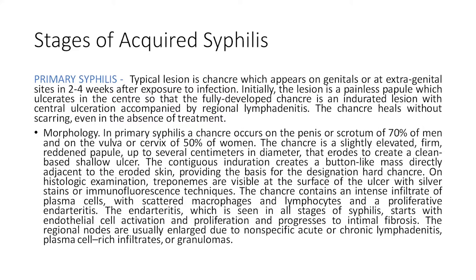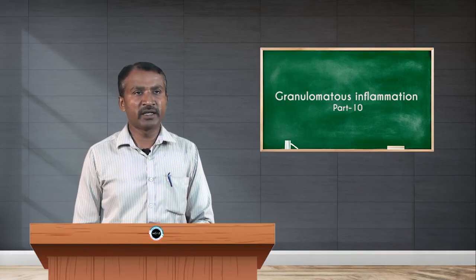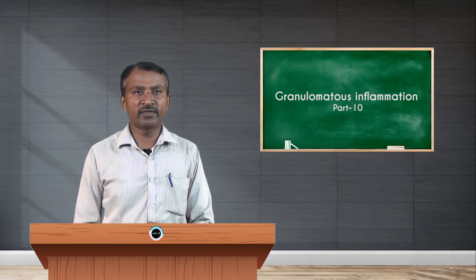In primary syphilis, a chancre occurs on the penis or scrotum in 70 percent of men, and on the vulva or cervix in 50 percent of women. The chancre is a slightly elevated, reddened papule up to several centimeters in diameter that erodes to create a clean-based shallow ulcer. The characteristic induration creates a button-like mass directly adjacent to the eroded skin, providing the basis for the designation 'hard chancre.'